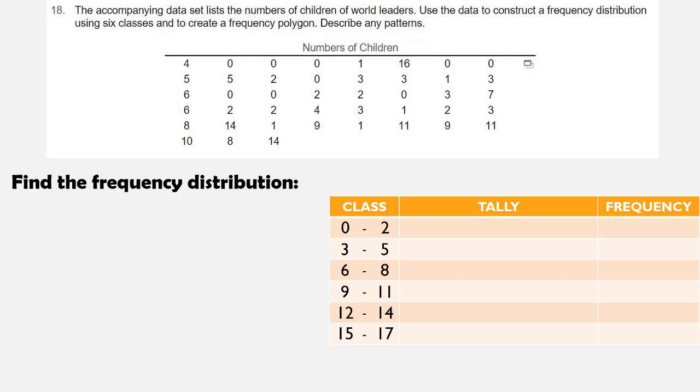So we're going to go data entry by data entry for these 43 values and put a tally mark to mark each one. So we'll start with 4, 0, 0, 0, 1, 16, 0, 0, 5, 5, 2, 0, 3, 3, 1, 3, 6, 0, 0, 0, 2, 2...